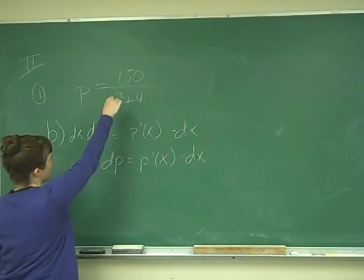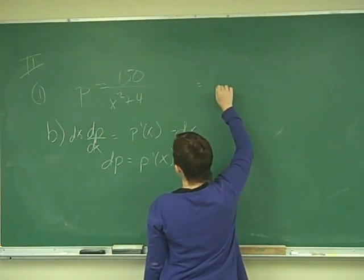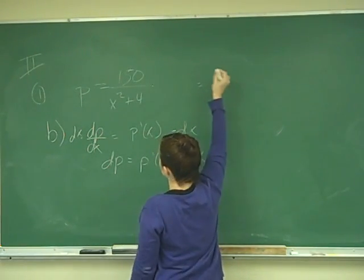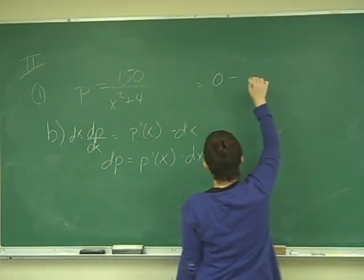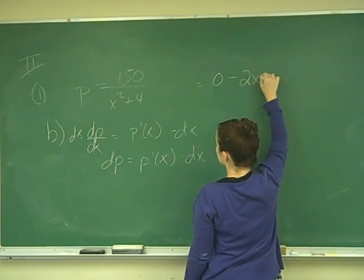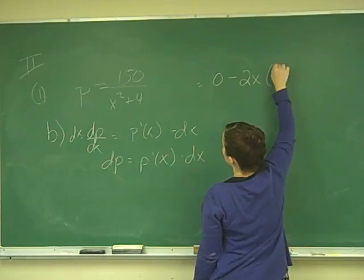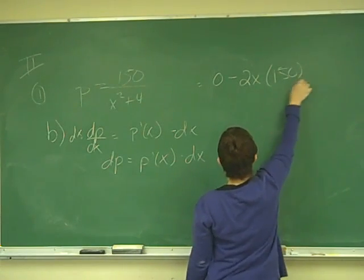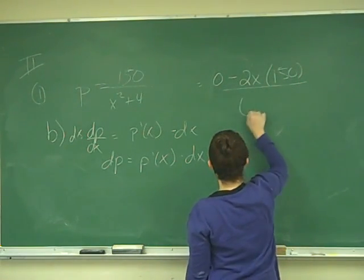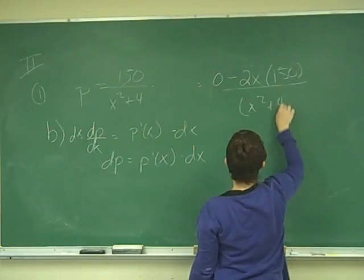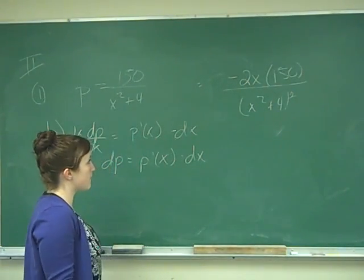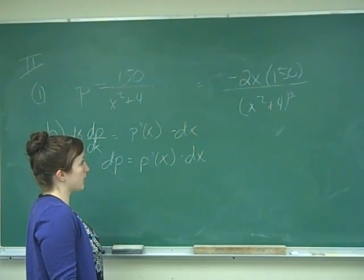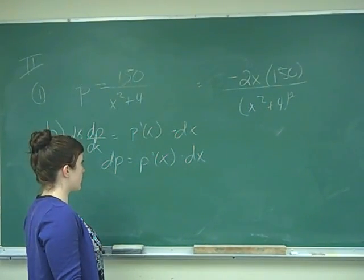We first need to take the derivative of this. The derivative is the derivative of the high, which is 0, times the low, minus the derivative of the low, which is 2X, times the high, which is 150, all over low squared. So X squared plus 4, quantity squared. We're looking at negative 2X times 150, all over X squared plus 4, quantity squared.